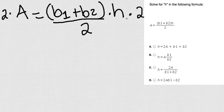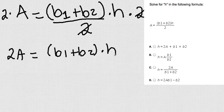I'm going to do the left and the right side. This guy is going to eliminate with this guy. And I'm going to have 2A equals B1 plus B2 times H.